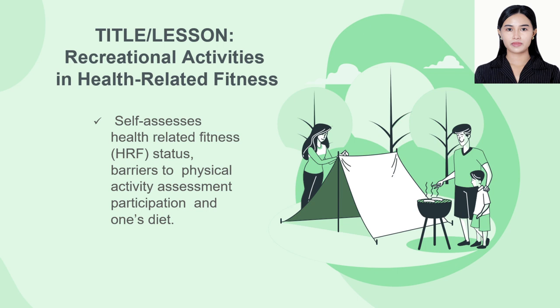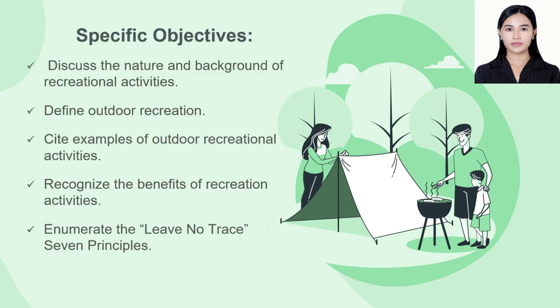Let me enumerate our specific objectives for today's lesson. First, we are going to discuss the nature and background of recreational activities. Second, define outdoor recreation. Third, we are going to cite examples of outdoor recreational activities. Fourth, we are going to recognize the benefits of recreational activities. And lastly, we are to enumerate the Leave No Trace 7 principles in doing outdoor activities.